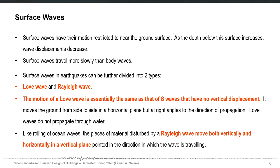We will see this in a moment. Surface waves have their motion restricted to near the ground surface — as depth below the surface increases, the wave displacement decreases. They are mostly concentrated towards the surface and are slower compared to body waves. They can be of two types: Love waves and Rayleigh waves.